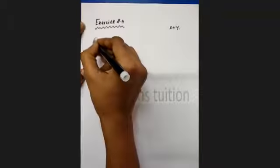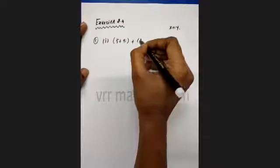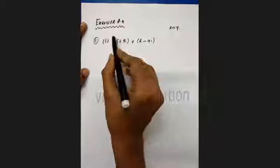Exercise 2.4. First, write the following in rectangular form. The rectangular form — if you read the word in mind — the complex number is x plus iy. Question number one has three divisions. The first division: 5 plus 9i, plus 2 minus 4i, the whole bar. We are finding this in rectangular form.